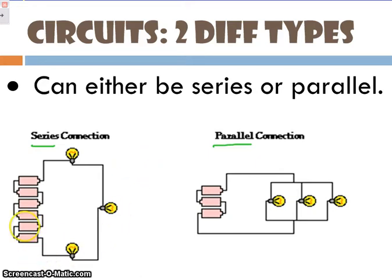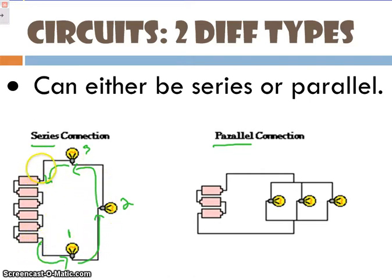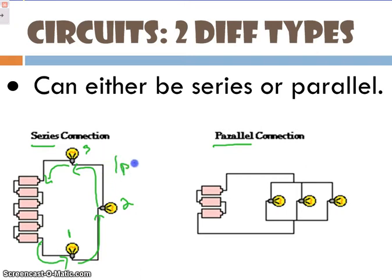Circuits can be what we call series, or circuits can be parallel. Although they may not look very different in these drawings, they're incredibly different. Let's take a look at the series circuit first. Let's say our electrons come out of this end of the battery. They hit light bulb number one, then light bulb number two, then light bulb number three, and eventually return back. Every electron that comes out of these batteries goes through all of these light bulbs or resistors — there is only one path for electrons.